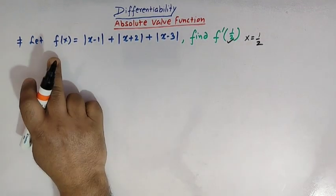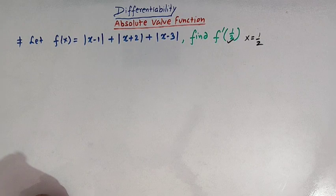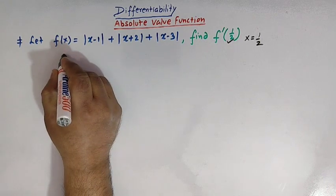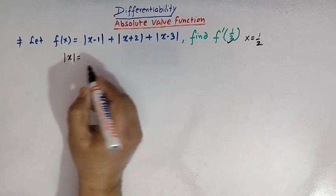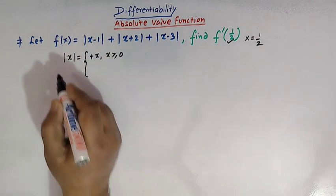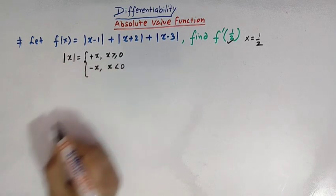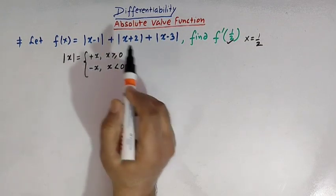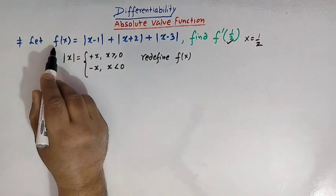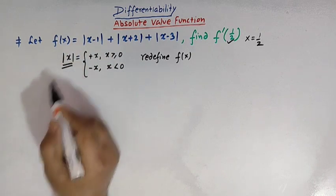Before finding the derivative of f of x at x equal to one half, let us first quickly revise the definition of the mod function. The definition says that mod of x takes the value positive x whenever x is greater than or equal to zero, and mod of x takes the value negative x whenever x is less than zero. We will use this definition to redefine the function f of x.